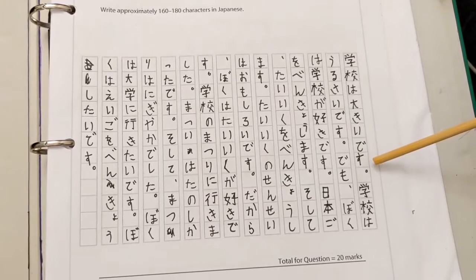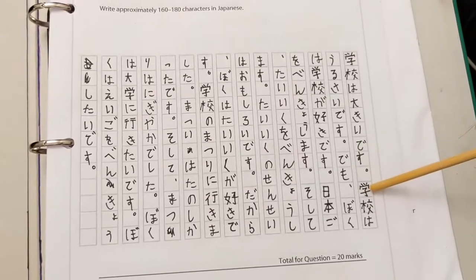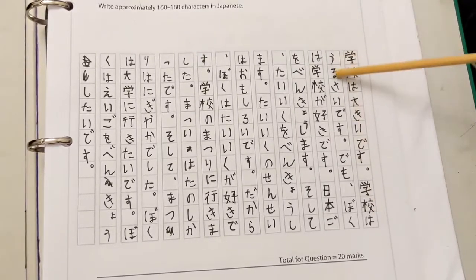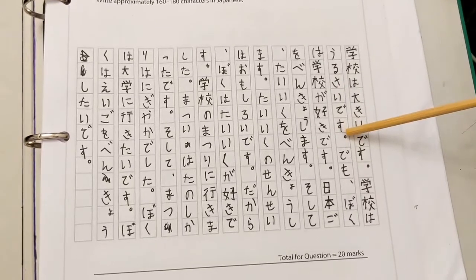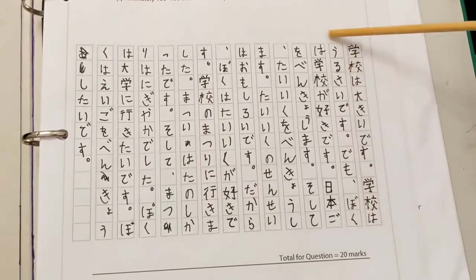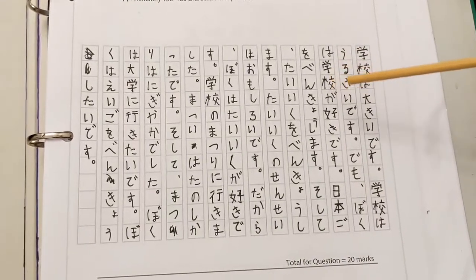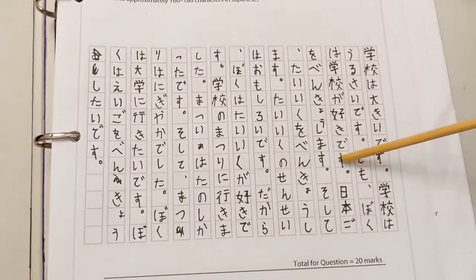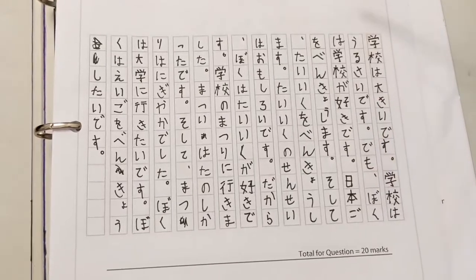学校は大きいです。The school is big. 学校はうるさいです。The school is noisy. でも、僕は学校が好きです, which means but I like school.